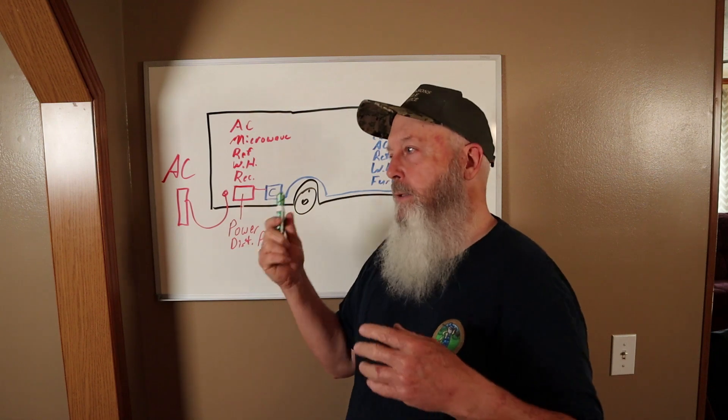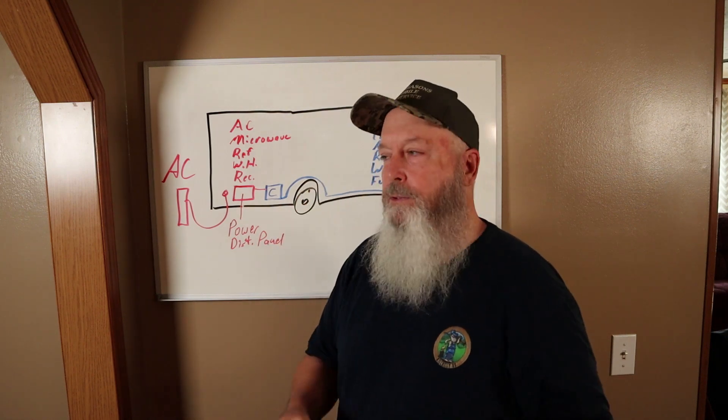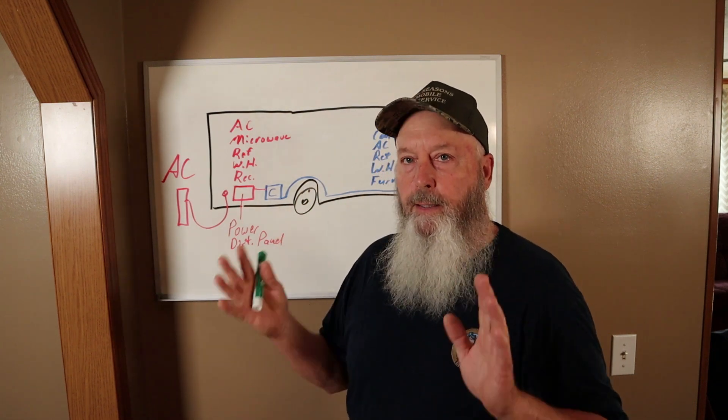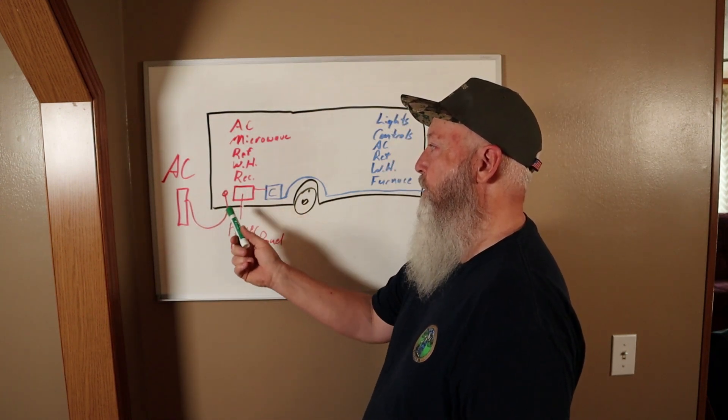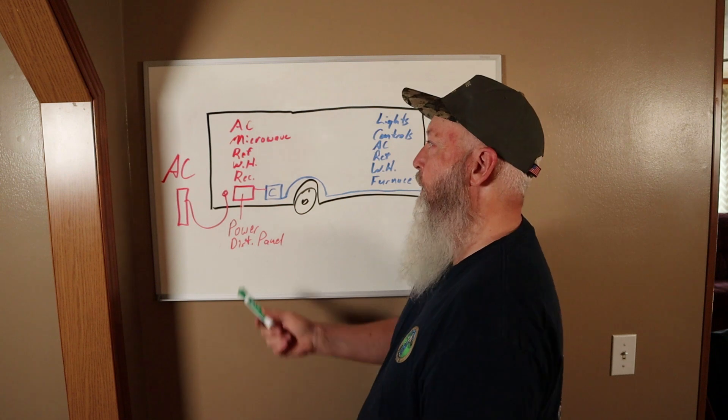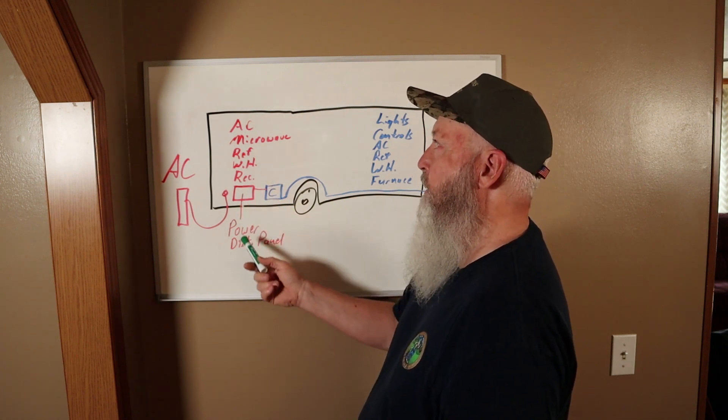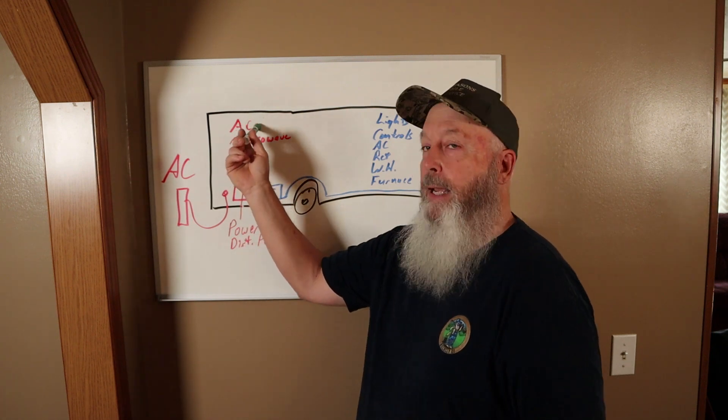You start adding motorhomes and big fifth wheels, this gets a lot more complicated. I'm just trying to keep it simple. Power comes in, goes to your power distribution panel, and that powers the AC side of the air conditioner, your microwave, the AC side of your refrigerator, the AC side of your water heater, and all your receptacles inside your camper.